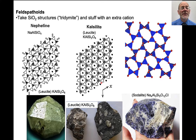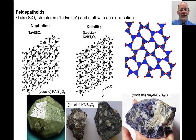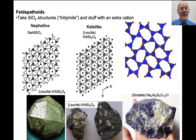I want to take a brief digression to talk about feldspathoids. Feldspathoids are minerals that form in very low silica rocks. The more common ones are leucite, nepheline, and sodalite — sodalite is this blue mineral. They have rings of silica tetrahedra very similar to tridymite, and there are cations stuck into the middles of these rings. To charge-balance, you change one of the silica tetrahedra into an aluminum tetrahedron, and that's how nepheline forms by putting sodium in there. Leucite puts a potassium in the middle of this ring, and similarly sodalite adds sodium and substitutes aluminum.